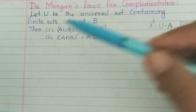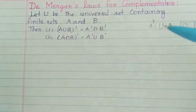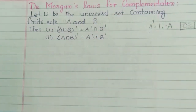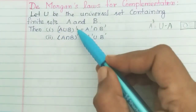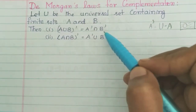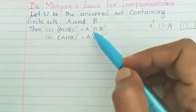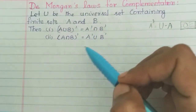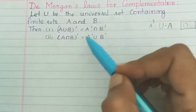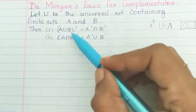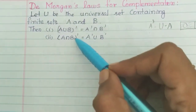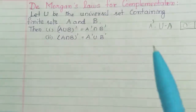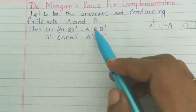Let U be the universal set containing finite sets A and B. So A, B — we have two sets. Here we have A union B the whole dash is equal to A dash intersection B dash. Now what do we have to see? Union is intersection. So in the complementation, union becomes intersection. Intersection is union.